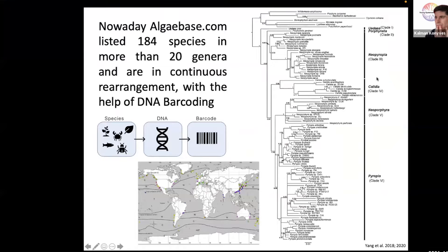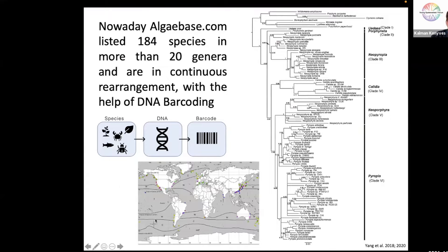Understanding the diversity of Bangiaceae is very difficult. Nowadays, algaebase.com, the most important website for macroalgae taxonomy, lists 184 species in more than 20 genera, and these are in continuous rearrangement with the help of DNA barcoding. Species lists are updated every year, but a lot of data is still missing from the Mediterranean, including the Italian coast.